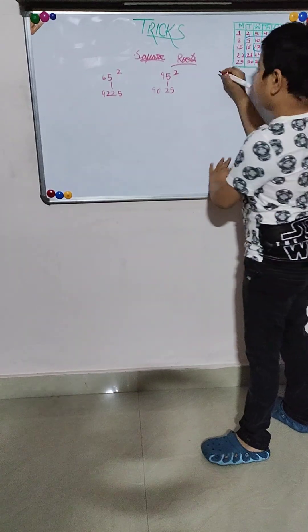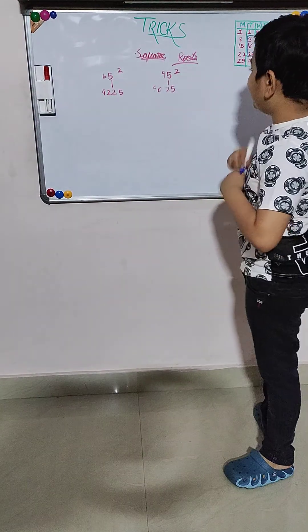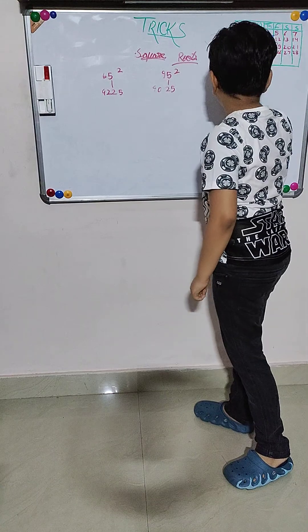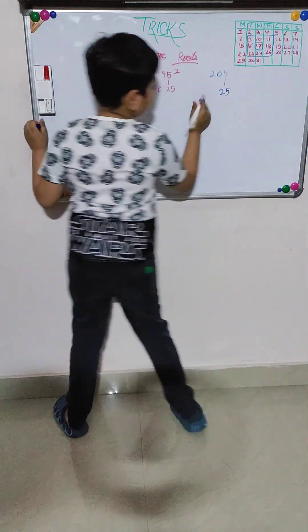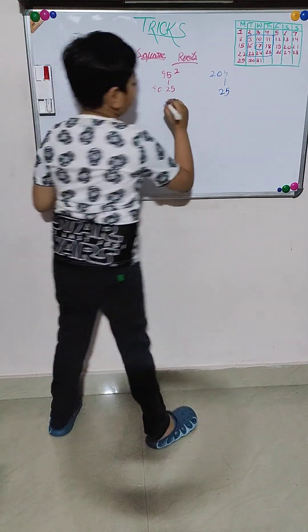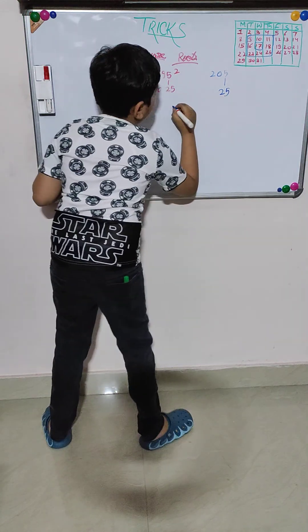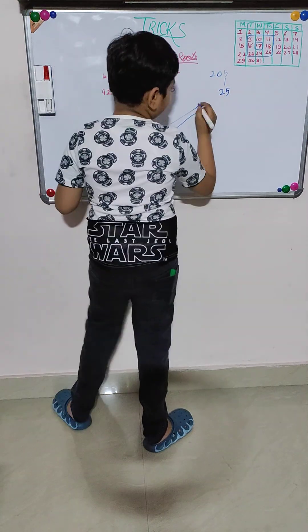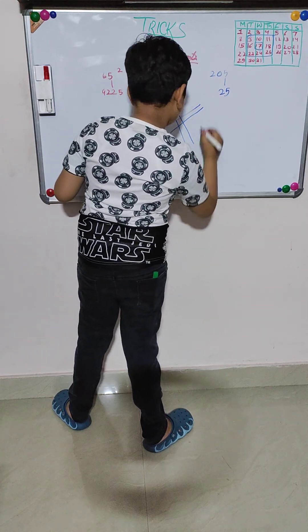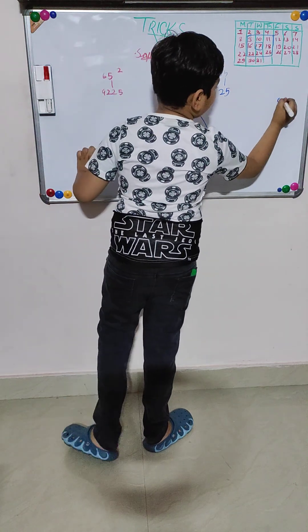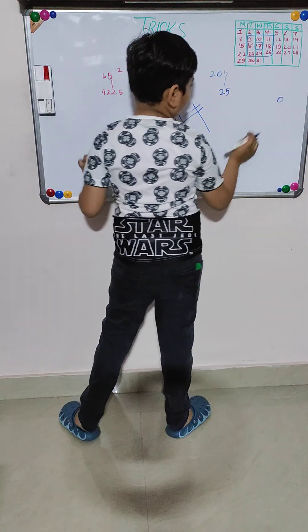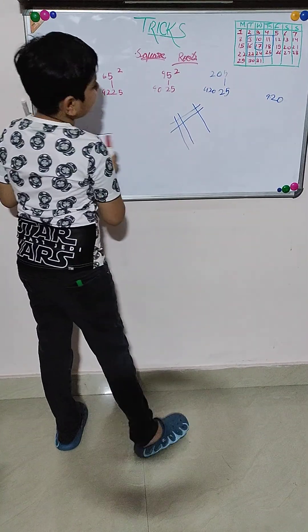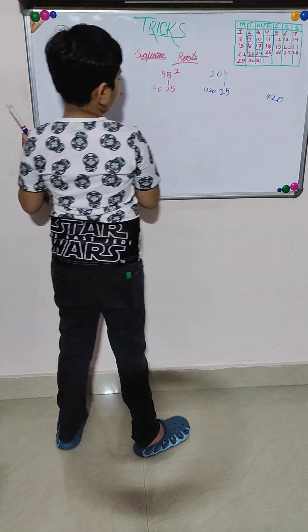Last but not the least is 205 squared. 205 is 20.25. The square of 5 is 25. And 20 into 21. First 20 into 21... 20, 21, first 0, 1, 2, 3, 4. The answer is 4, 42,025.